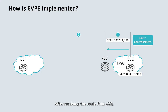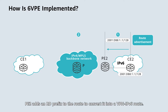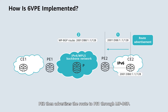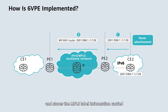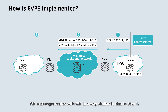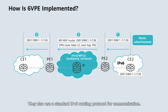Step 2: after receiving the route from CE2, PE2 adds an RD prefix to the route to convert it into a VPN IPv6 route. PE2 then advertises the route to PE1 through MP-BGP. After receiving the VPN IPv6 route, PE1 adds a route to its VPN IPv6 routing table and stores the MPLS label information carried in the MP-BGP update message. Step 3: PE1 exchanges routes with CE1 in a way similar to that in Step 1, also using a standard IPv6 routing protocol for communication.